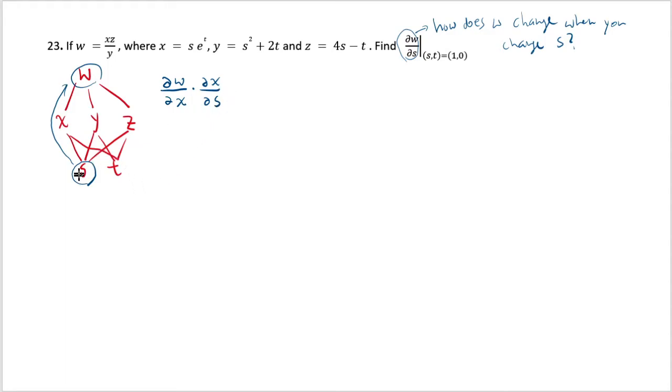But that's not all. Change of s will also bring change to w going through this path, going through y. And that one is measured by first figuring out how much w changes when you change y, and then figuring out how y would change when you change s. And then thirdly, there's this path, which is measured by multiplying how much w changes when you change z times how much z changes when you change s.